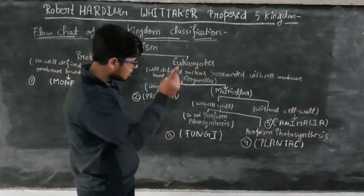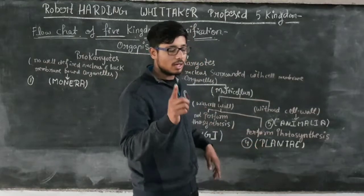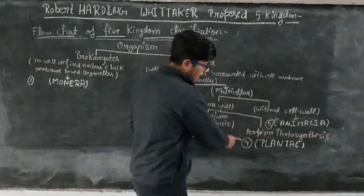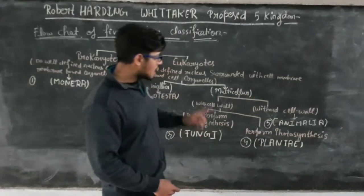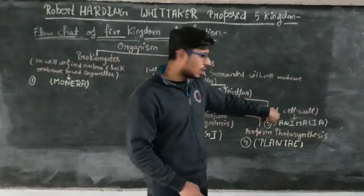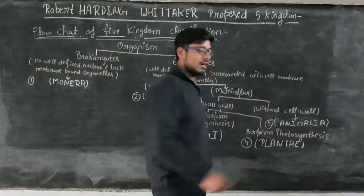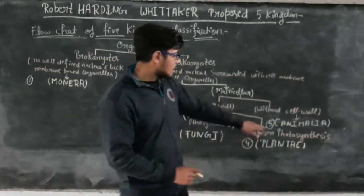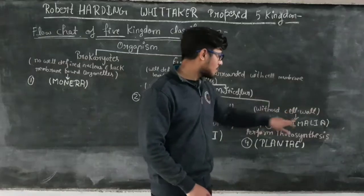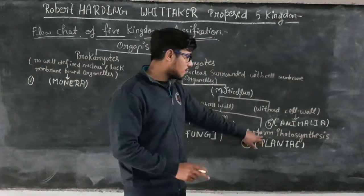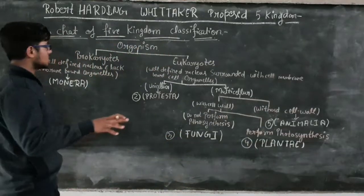Those that do not perform photosynthesis are included in the group of Fungi. Those organisms that do perform photosynthesis, we call them plants. Without cell wall, they are included in the group of Animalia — animals do not perform photosynthesis, that is why they are included in the group without cell wall, and those that perform photosynthesis are included in the group of Plantae.